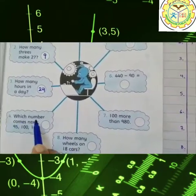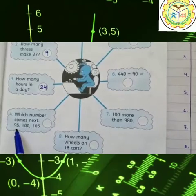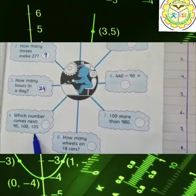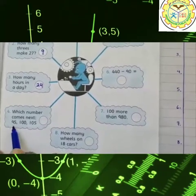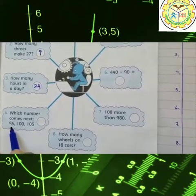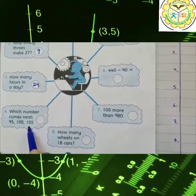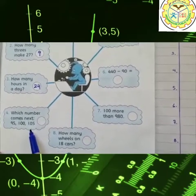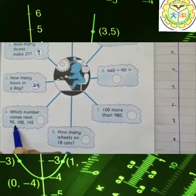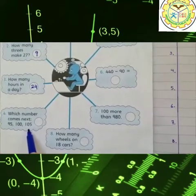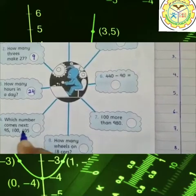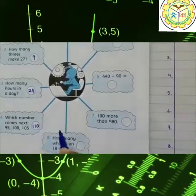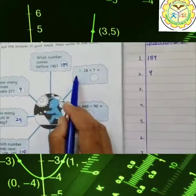Now we come on question number four: which number comes next? 95, 100, 105. Okay students, read in your mind what is the sequence in this series. 95, 100, 105. If you specifically see this sequence, you understand that there is the difference of 5 numbers in these three numbers. So our fourth number is 110.